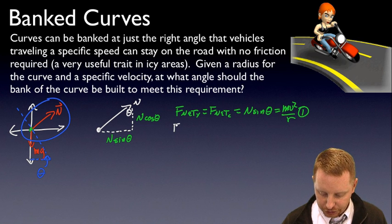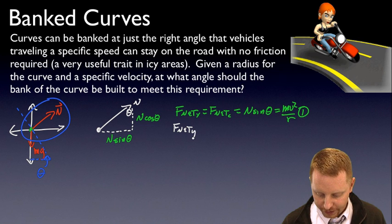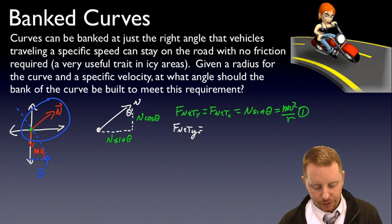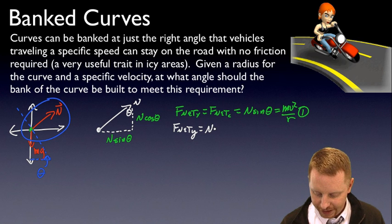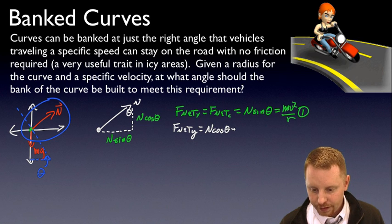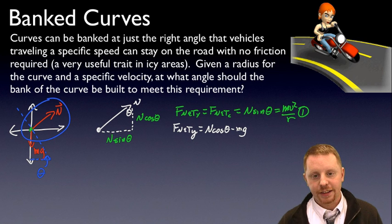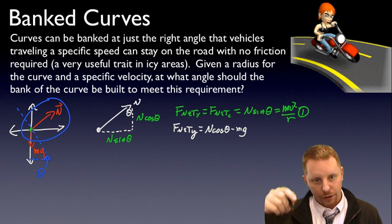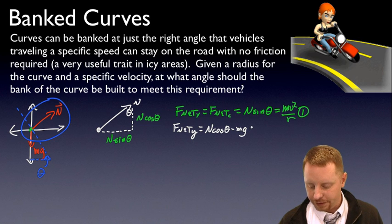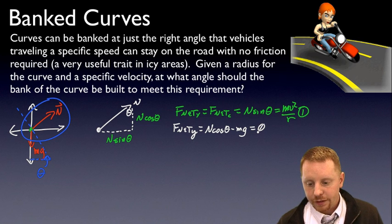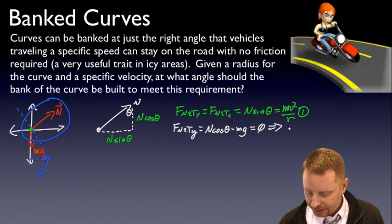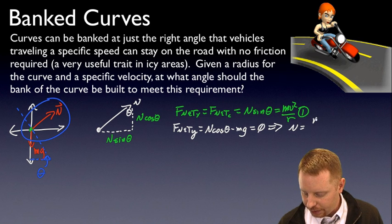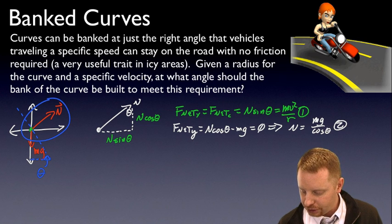We can do the same thing in the y direction. Net force in the y direction is going to equal, well, we've got the vertical component of the normal force, in this case N cos theta minus its weight mg, and since it's not accelerating vertically, it's not flying spontaneously up off the road or going down into it, that must have an acceleration of zero. So we can very quickly solve for N and say that N must equal mg over cos theta, equation two.